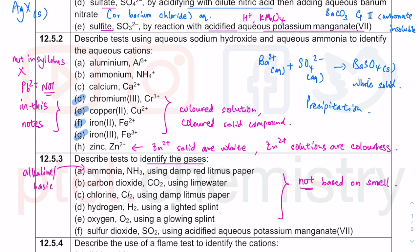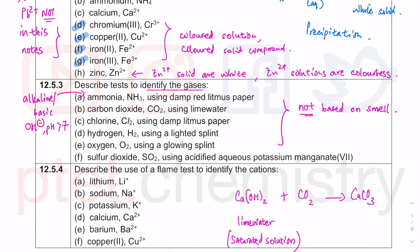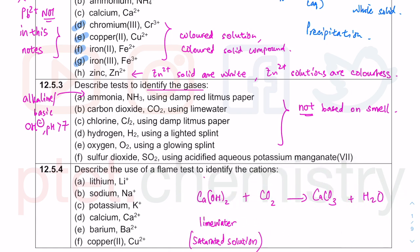Carbon dioxide is tested with lime water, which is a saturated solution of calcium hydroxide. When CO₂ reacts with Ca(OH)₂, you get calcium carbonate — a group 2 carbonate that is insoluble — plus H₂O. The lime water turns milky. This is essentially a neutralization reaction: the alkali Ca(OH)₂ reacts with the acidic oxide CO₂ to form a salt and water.